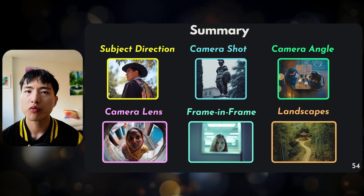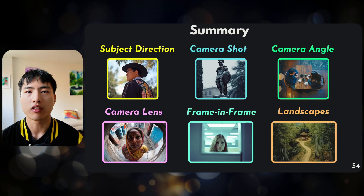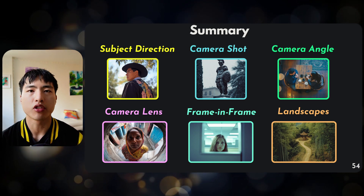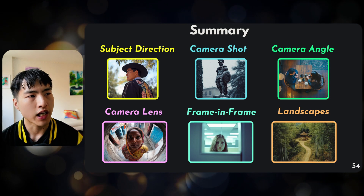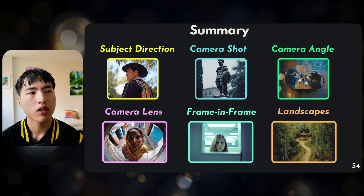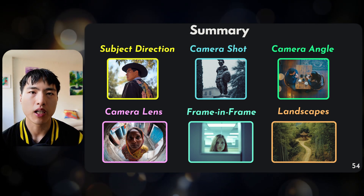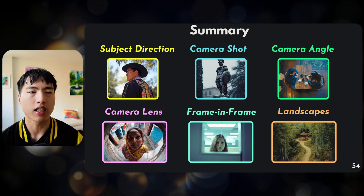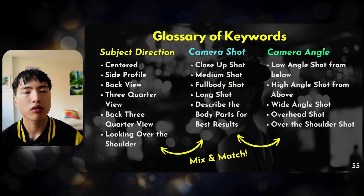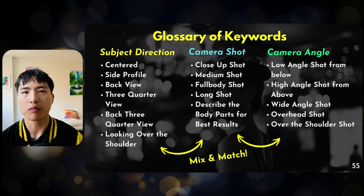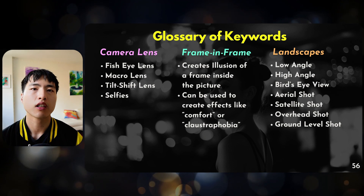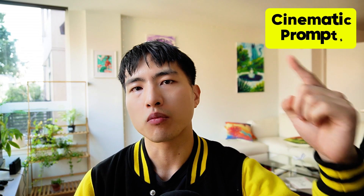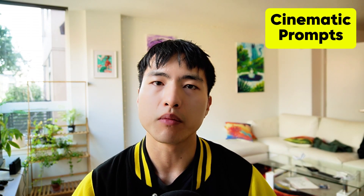In summary, we covered the direction that the subject is facing, how to frame that subject inside a camera shot, the angle we're looking at them from, the type of camera lens used to shoot the photo, how to use the frame-within-a-frame technique, and finally camera angles for landscapes. There's a glossary of keywords included, and I'll include an ebook in the description if you're interested. Also check out the linked video if you want to learn more about cinematic prompting in Midjourney.